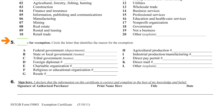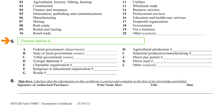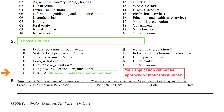Section 5: choose option G, which asks for your resale number. This is the number found on your sales tax permit. Please note, your application cannot be approved without this number.